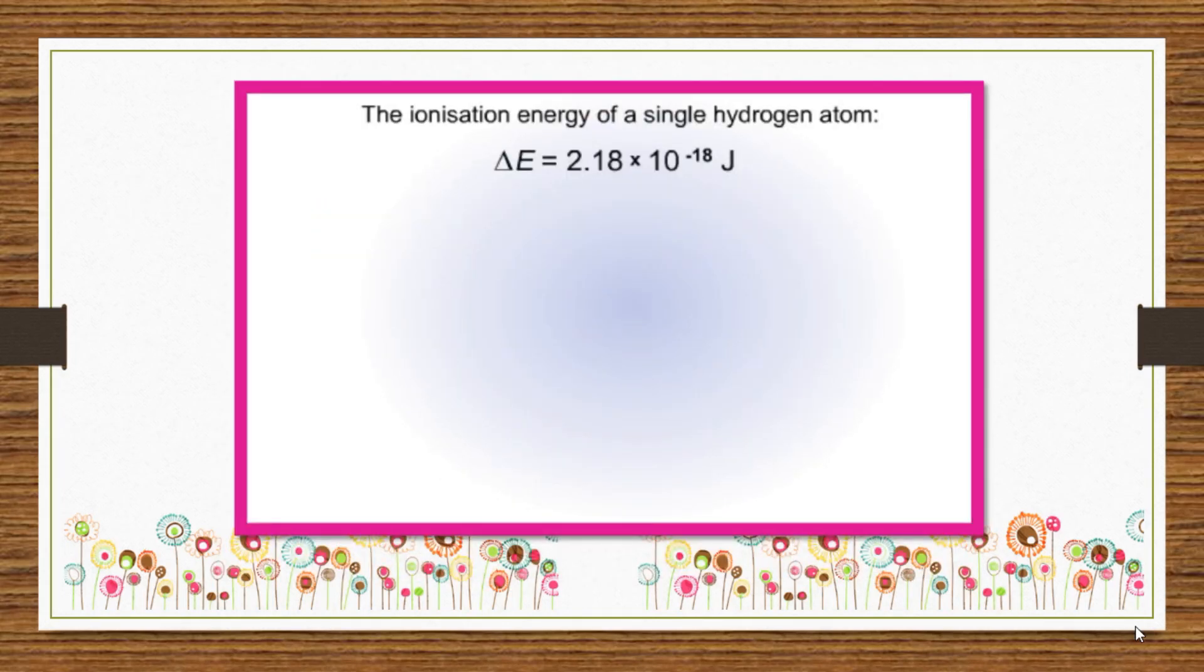Now, let us calculate the ionization energy of hydrogen expressed in joules per mole and compare it with the experimentally determined value. The ionization energy of a single hydrogen atom is, you already know that the value of Avogadro's number Na tells us how many particles there are in one mole of the element.